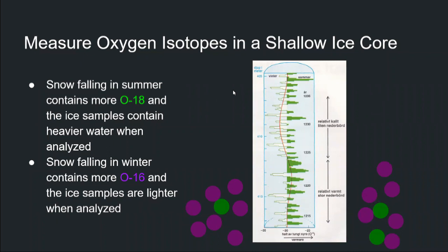For example, snow that falls in the summer contains more O18 than snow that falls in the winter. Why? Because in summer you have more energy — you can evaporate and take more O18 from the ocean, and O18 precipitates preferentially, so you have more O18 in your snow during summer. For snow falling in winter, because you have less energy available and it's colder, you're going to have more O16 in your sample.